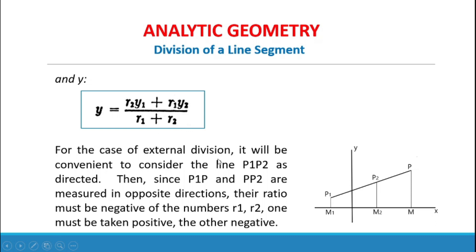For the case of external division, it will be convenient to consider the line P1P2 as directed. Since P1P and PP2 are measured in opposite directions, the ratio must be negative. Of the numbers R1 and R2, one must be taken positive and the other negative. So the ratio R1 is M1M with a positive sign, and for PP2 the direction is going back, therefore the ratio R2 is MM2 with a negative sign.